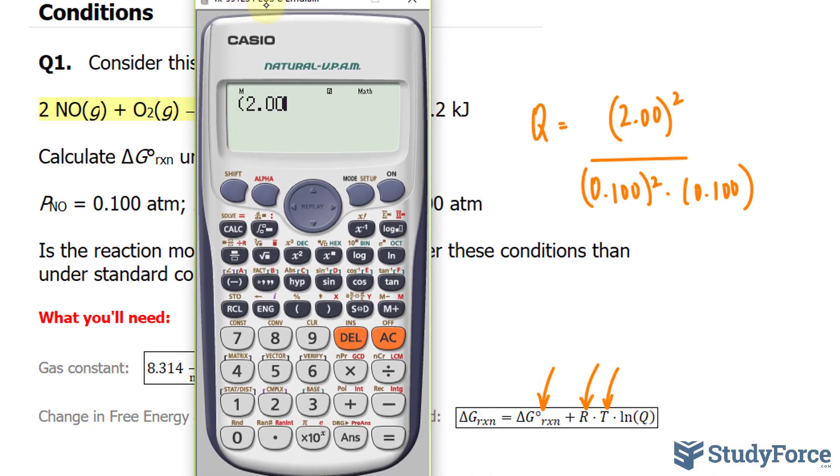We have bracket 2.00. That's three significant figures. Raise that to the power of 2, divided by, at the bottom, 0.100 squared times 0.100, and we get a Q value of 4,000.